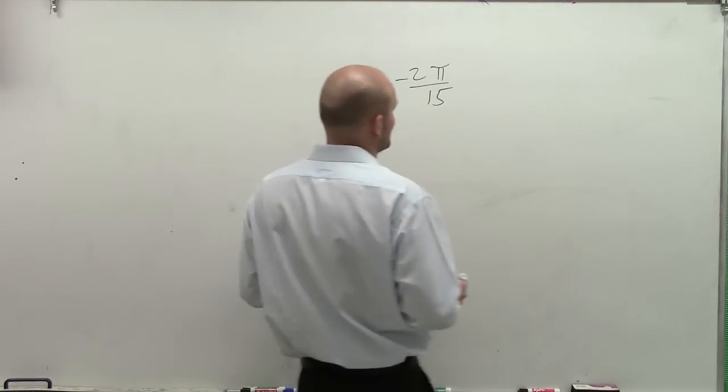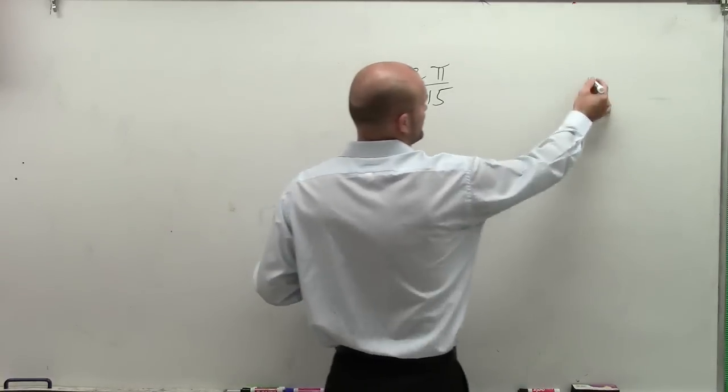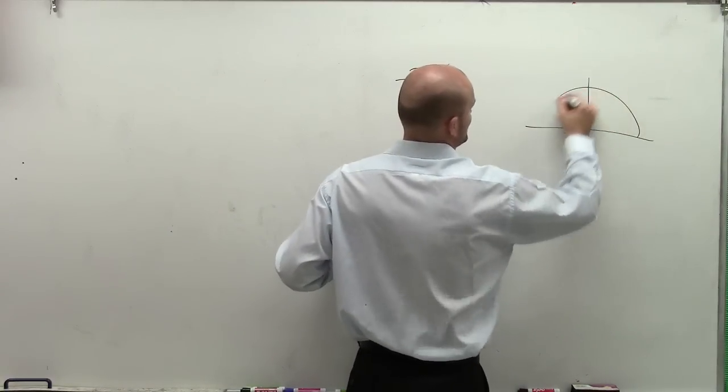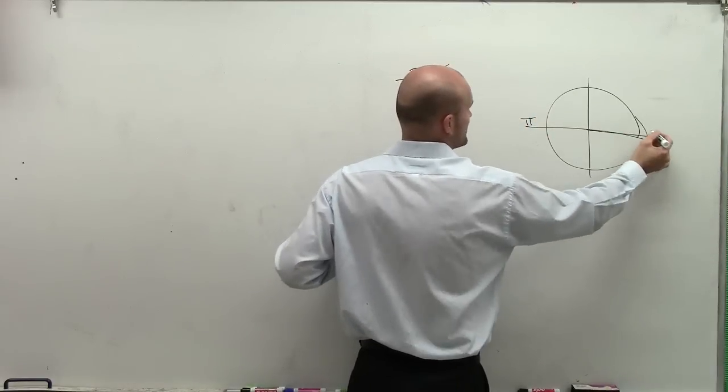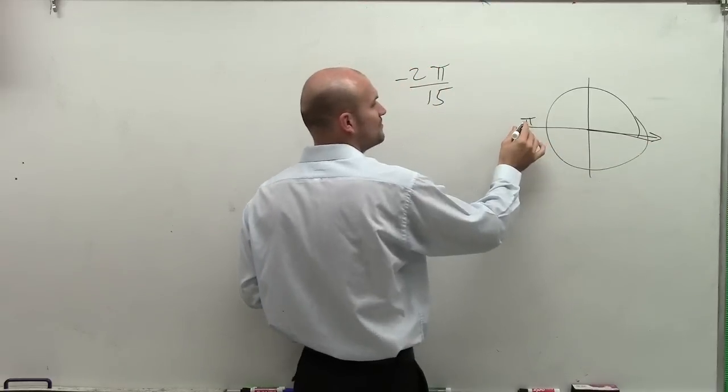So I look at this angle, and this is going to be negative 2 pi over 15. So if we were to draw a little circle here, if here, halfway around a circle, right, here's our initial side, halfway around a circle is pi.